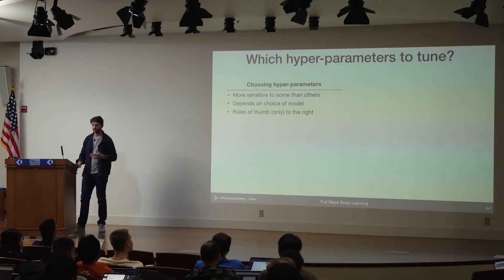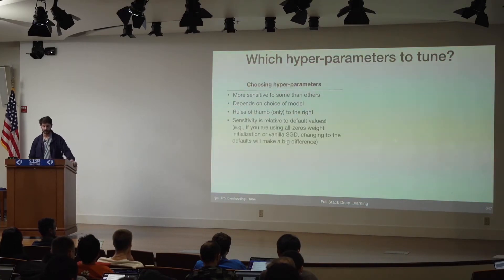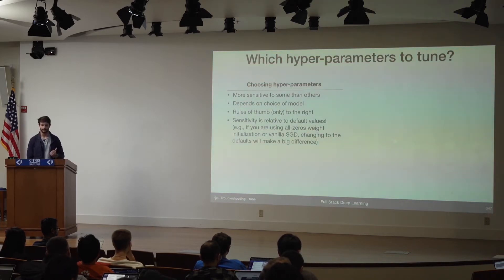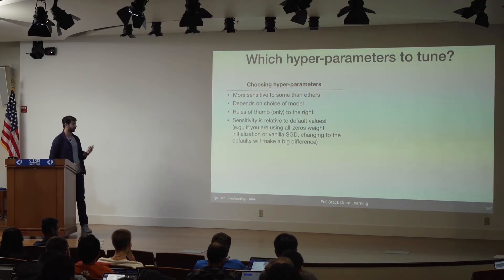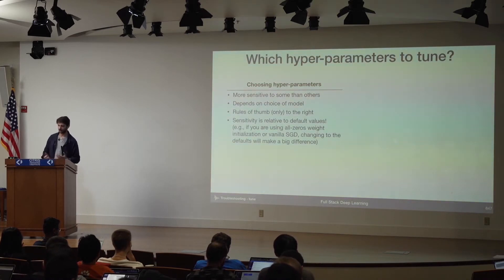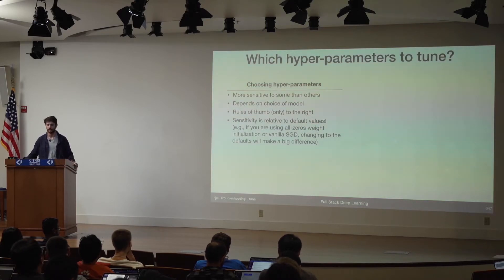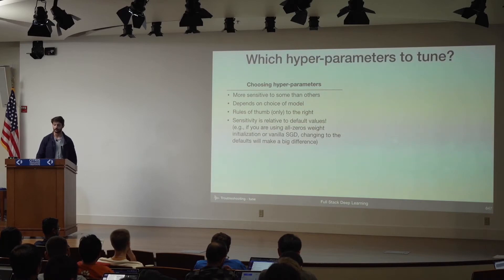If you're working on a new problem, which things should you try first? A couple of caveats: first, these are really only rules of thumb and might be very different for your problem. Second, the sensitivity I'm going to talk about is relative to default values. For example, if you're initializing your weights with all zeros, you'll get a huge jump from moving to some other weight initialization scheme. But if you're already using sensible defaults, weight initialization might be a less sensitive metric.